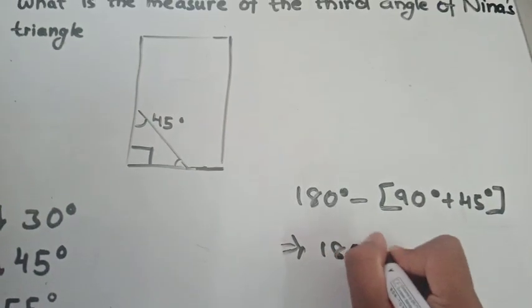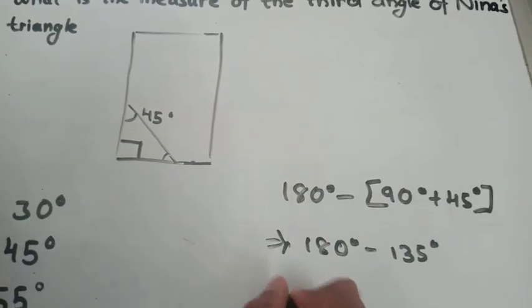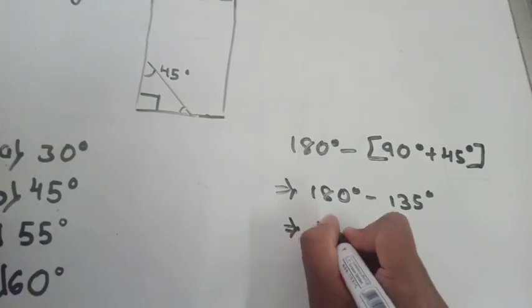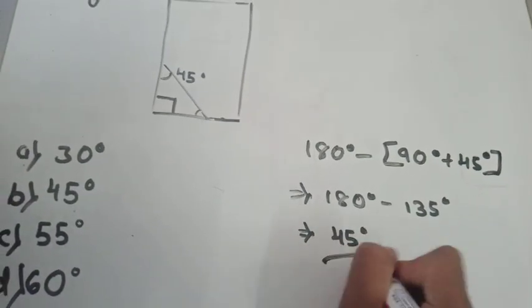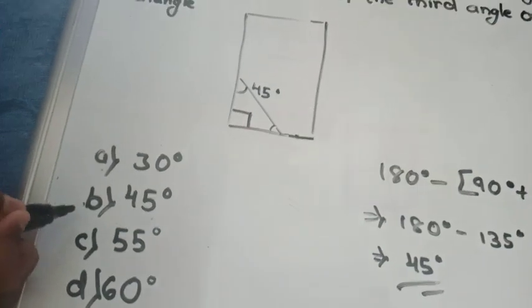It is equal to 180 degrees minus 135 degrees which is equal to 45 degrees. So, the third angle will be 45 degrees and Option D will be the correct angle.